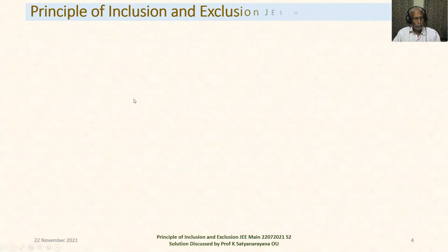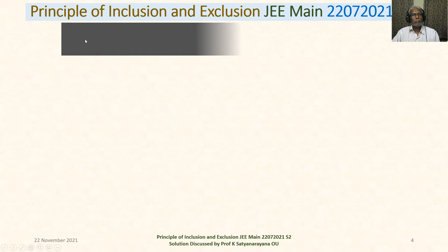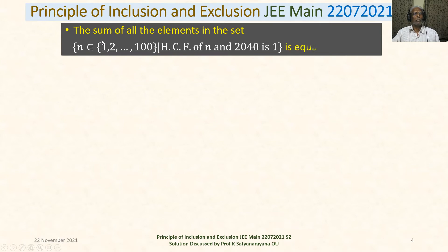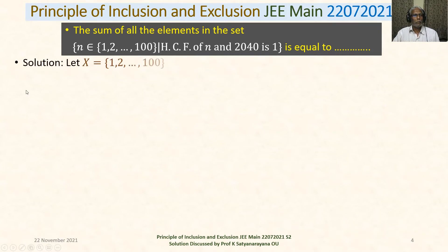The problem is: find the sum of all elements in the set of n belonging to {1, 2, 3, ..., 100} such that HCF, the highest common factor, of n and 2040 is 1.